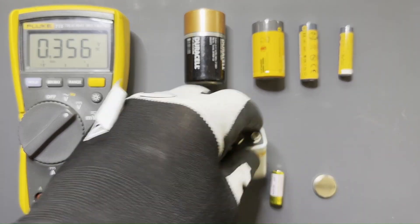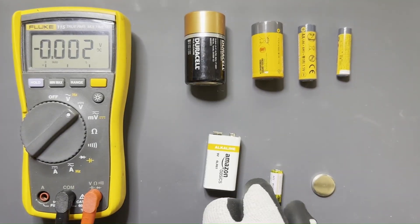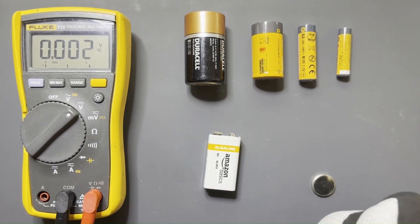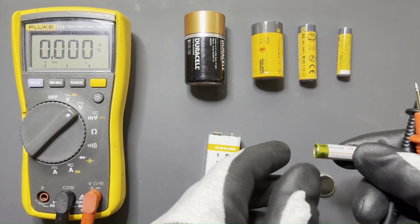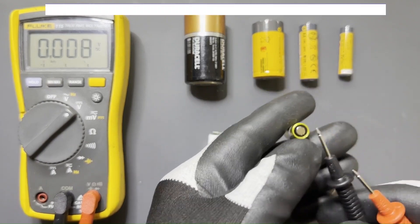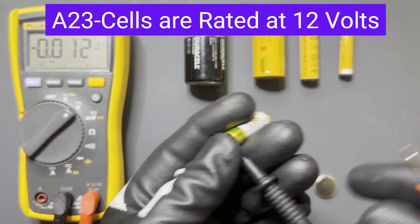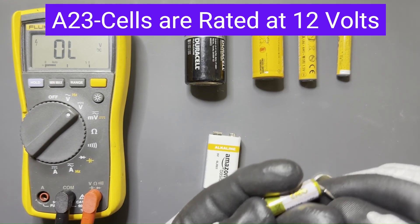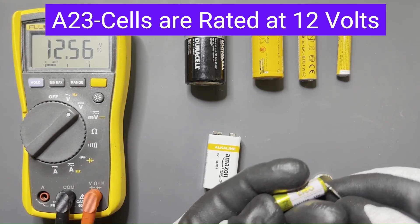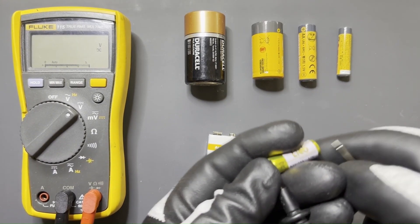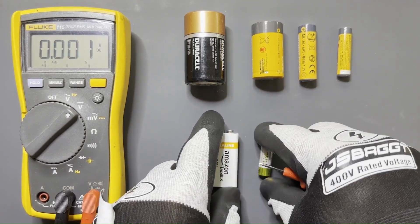This is an A23 battery, what you often find in some garage remote controls and other applications. Again, the pointed side is going to be positive. We're reading 12.56. That's a good 4% over, that indicates that's a good battery there.